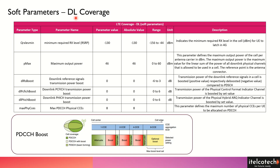In the downlink, the first soft parameter we can look into is the minimum required received level that we define for the user to achieve in order to have communication with the base station. This is also known as QRX Level Min, and its value ranges from NEG 44 to NEG 156 dBm.